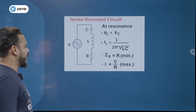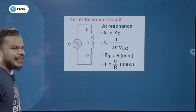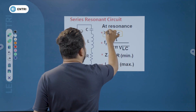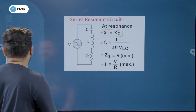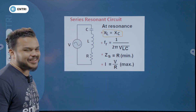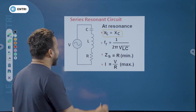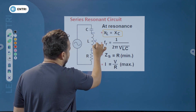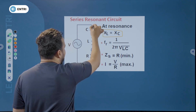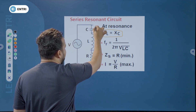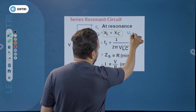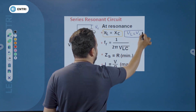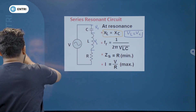At resonance, the basic condition is XL is equal to XC. The inductor voltage and capacitor voltage are equal, so VL equals VC, and therefore XL equals XC.